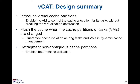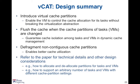To sum up, these are the three key design ideas for VCAT. We introduce virtual cache partitions so that the VM can control the cache allocation for its tasks without breaking the virtualization abstraction. We flush the cache when the cache partitions for a task or VM are changed, so that we can guarantee strong cache isolation among tasks and VMs. We defragment the non-contiguous cache partitions so that we can better utilize the cache resource. In the paper, we also discuss other design considerations, such as how to allocate and deallocate cache partitions for tasks and VMs, and how to support an arbitrary number of tasks and VMs with different cache partition settings.